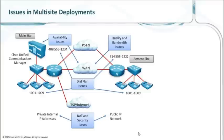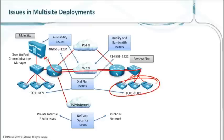In our scenario here, we have issues with availability. The assumption is that your phones at your branch location are registering through the WAN. So if we have availability issues with the WAN, that causes an issue with the phones there. There are also quality and bandwidth issues based on how much bandwidth we have through the WAN. And then we look at NAT security issues — that would be if you happen to have a Call Manager with a public-facing IP address.